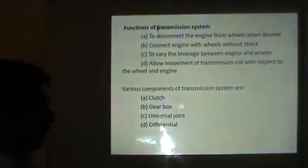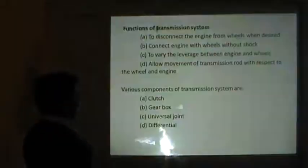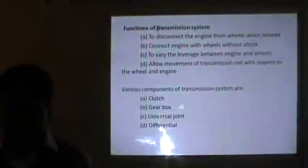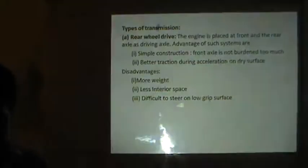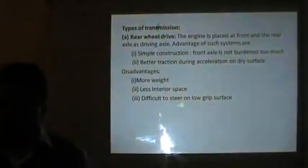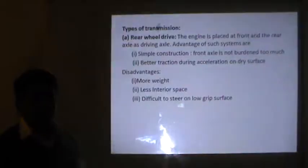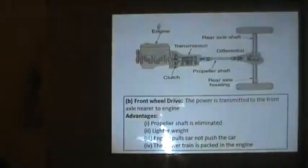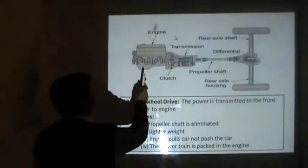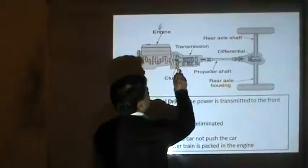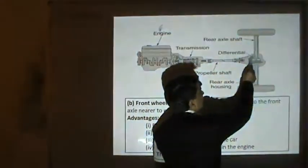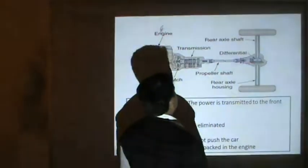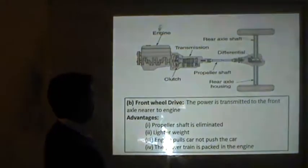Based on these functions, the following components are used: clutch, gearbox, universal joint, and differential. There are different types of transmission systems. One is rear wheel drive, where power is transmitted to the rear wheels. As seen in the diagram, the engine at the front transmits power via a gearbox and clutch to the rear wheels through a differential gear using two universal joints — this is called rear wheel drive.